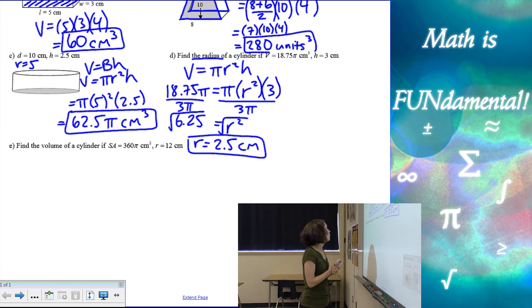Last example, we have find the volume of a cylinder if the surface area is 360 pi and the radius is 12. So now we have to review our surface area of a cylinder formula. So if you don't remember or you haven't learned it yet, it is in my last couple of videos. You can go back and look.